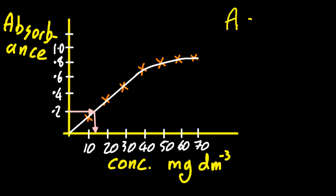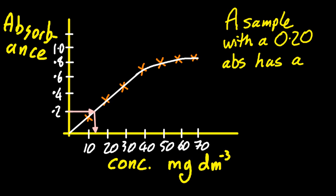So the question is, if I have an absorbance of 0.2, what was the concentration of the element in my solution? And it looks like it comes out about 13 milligrams per decimetre cubed.